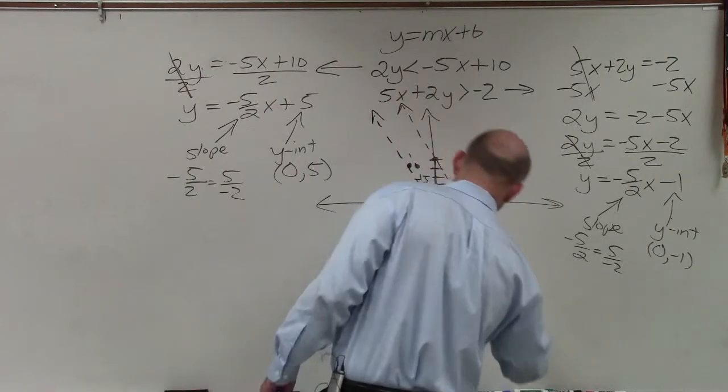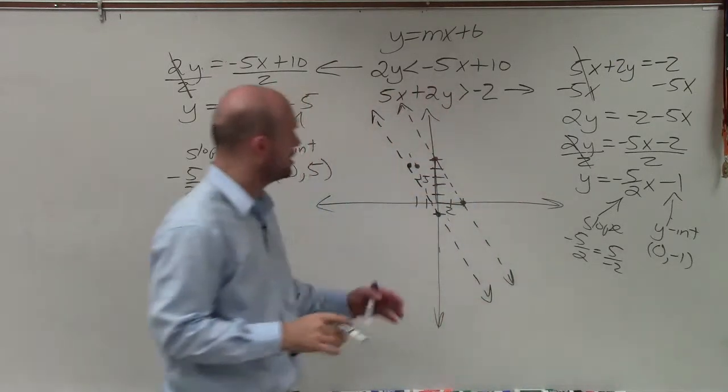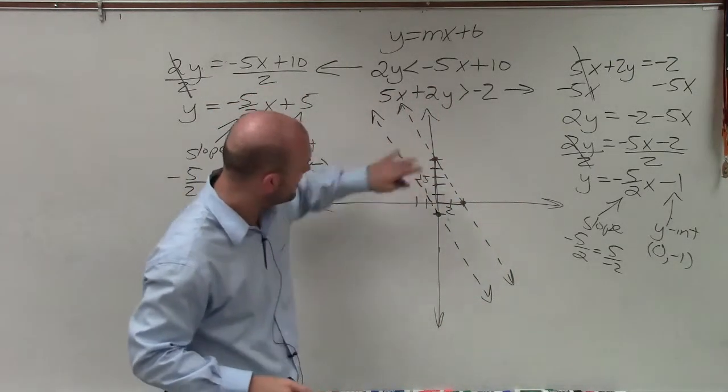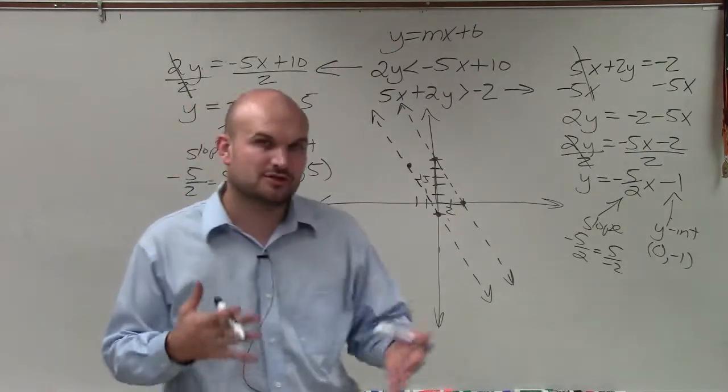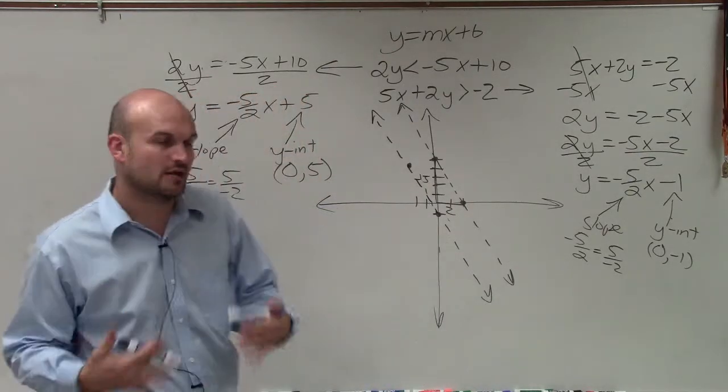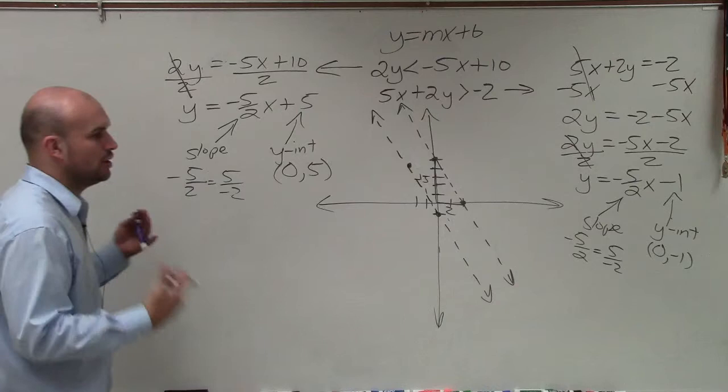So since they have the same slope, we now know that these are going to be parallel lines. But still, we need to be able to determine our shading. Is our shading, are we going to be shading above or below each one of these lines?